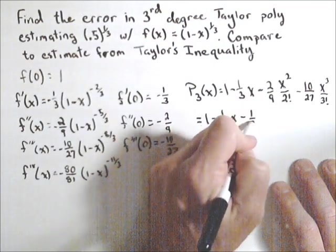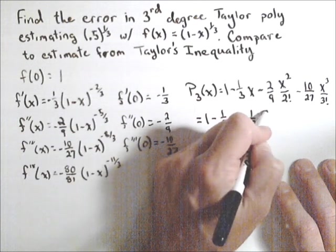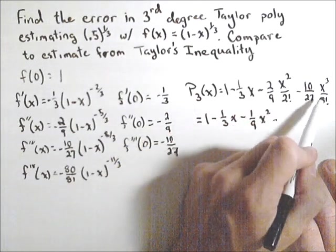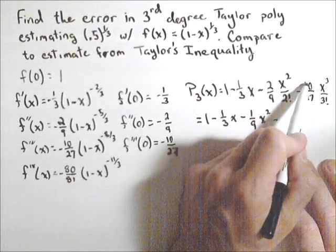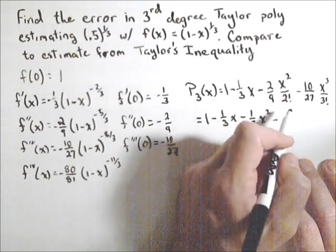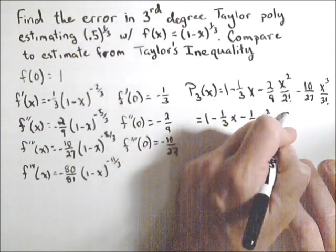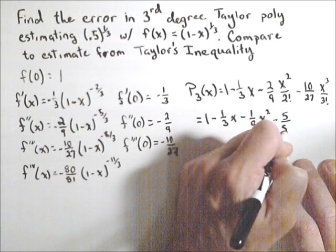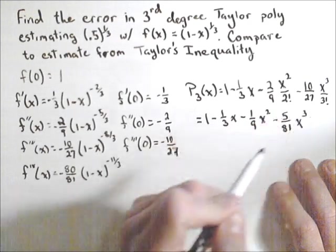Minus 10/27 times x^3 over 3 factorial. So let's simplify this. So 1 - 1/3x - 2 factorial is just 2 that cancels with that 2, so we get 1/9x^2 minus, we can cancel the 2 out with that 2 from the 10, and that gives us 5/27 times 3 which is 81, x^3.